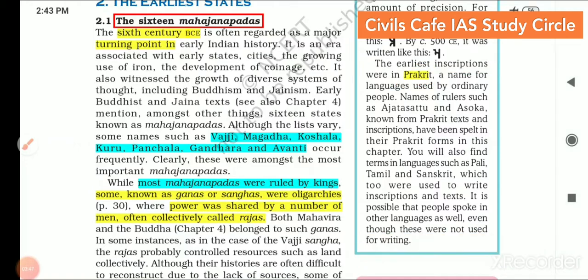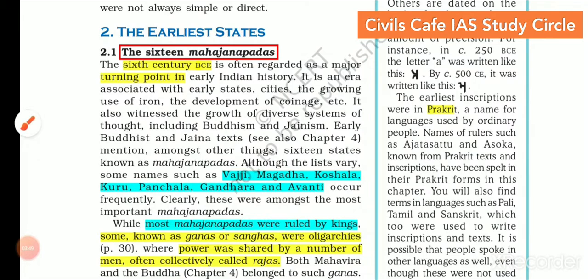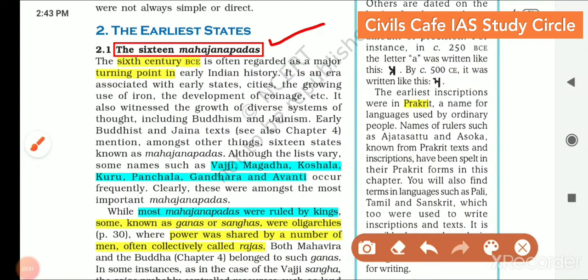Coming to the earliest states, there were 16 Mahajanapadas. The 6th century BC is often regarded as a major turning point in early Indian history, because it is an era associated with early states, cities, the growing use of iron, and the development of coinage. All of these features emerged during the 6th century BC.